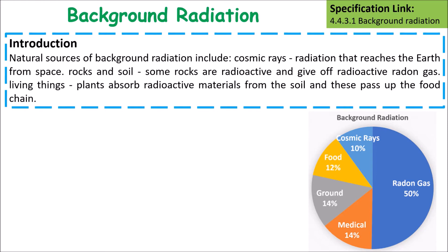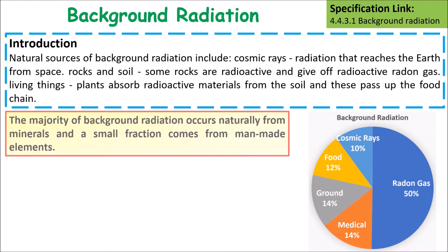Some rocks are radioactive and give off radioactive radon gas. Living things and plants absorb radioactive materials from the soil, and these can be passed up the food chain. The majority of background radiation occurs naturally from minerals.